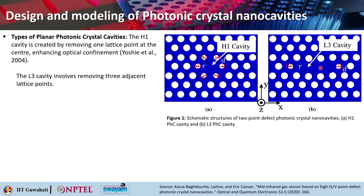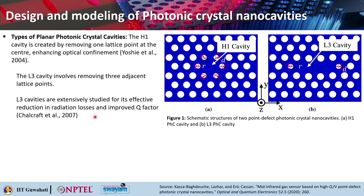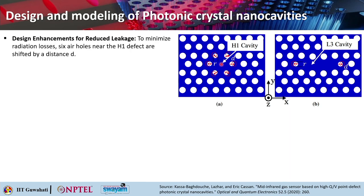The second cavity is an L3 cavity — 'L' for line and '3' meaning three holes are missing. It involves removing three adjacent lattice points in a particular line. These cavities were studied extensively for effective reduction in radiation losses, yielding very high Q factors, and were studied by Chalcraft et al. in 2007.